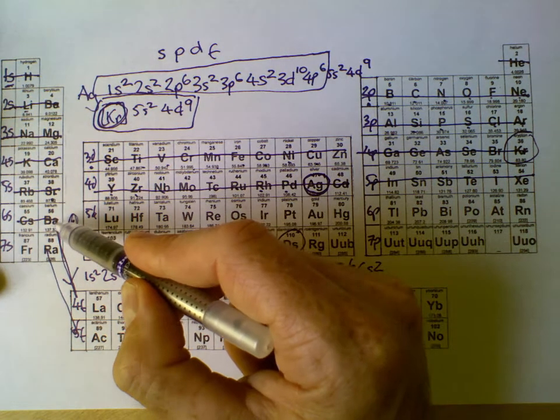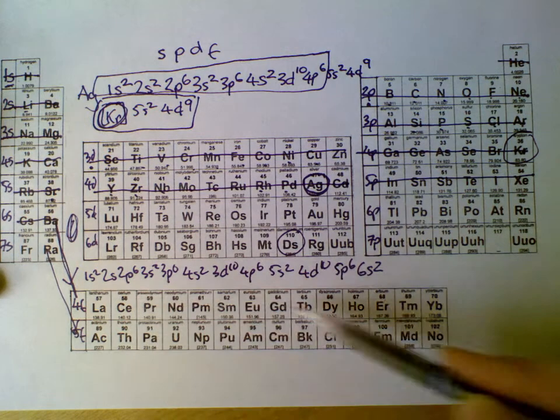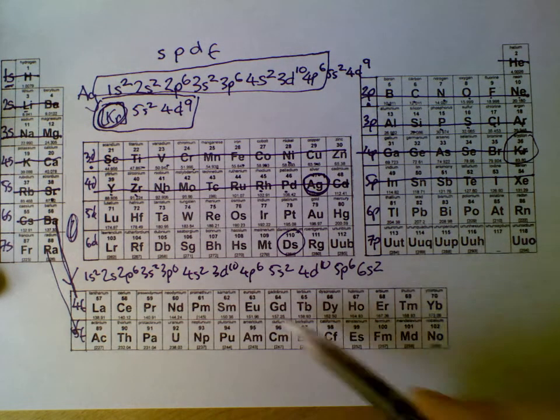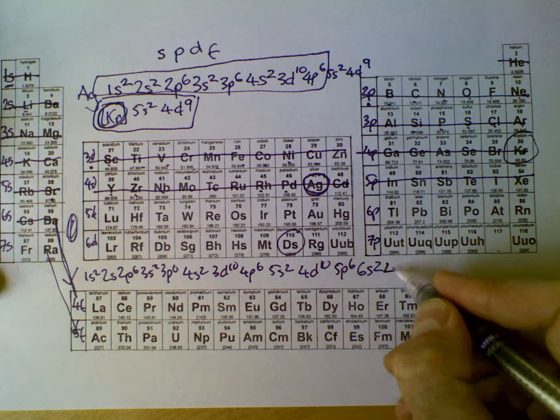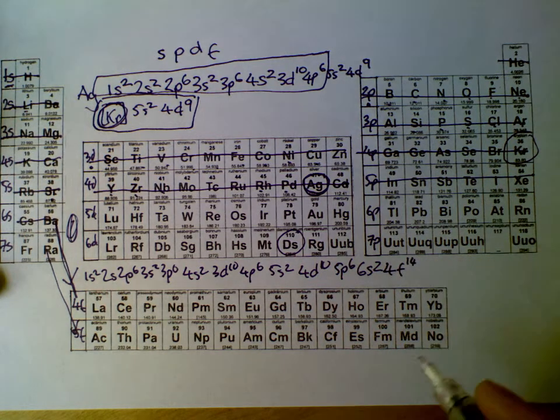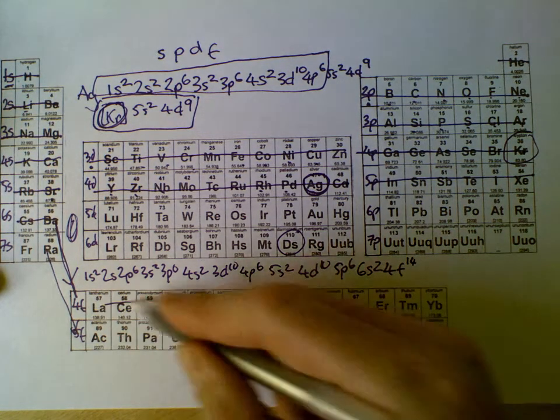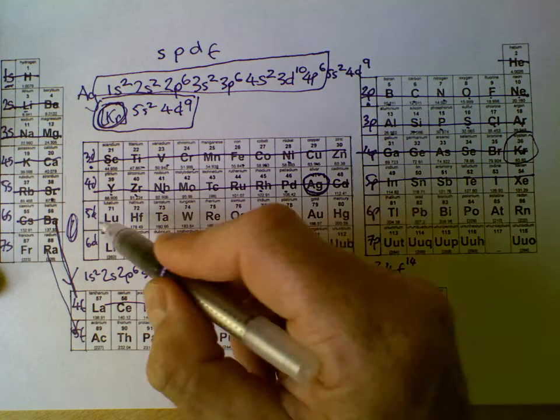So after 6s2, we take a little detour and do 4f14, that group there, and we're back up to here.